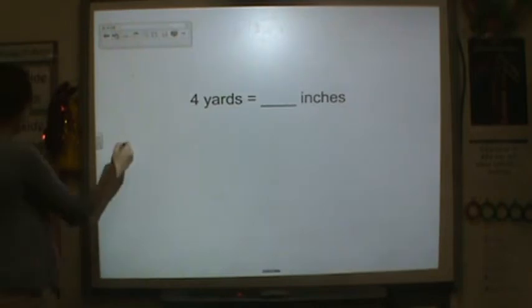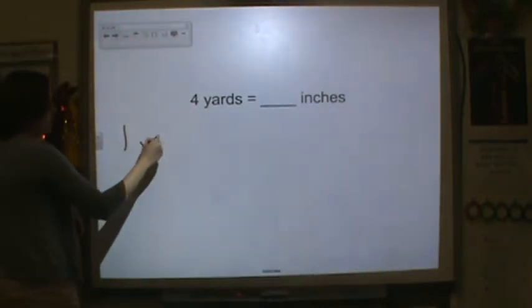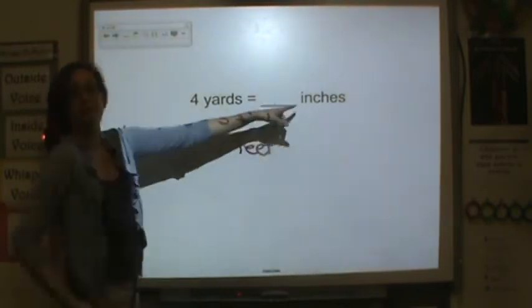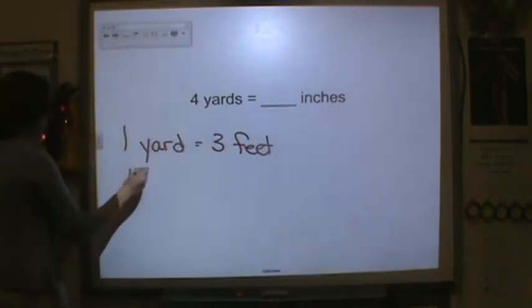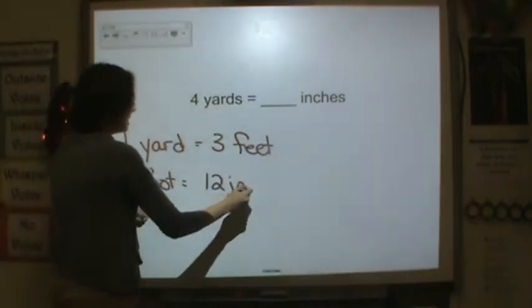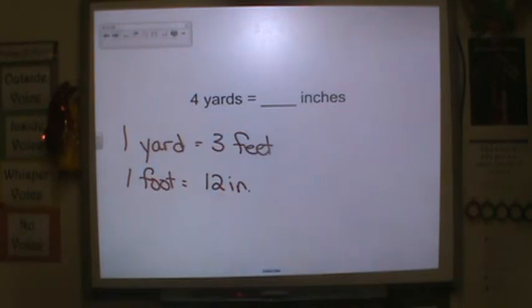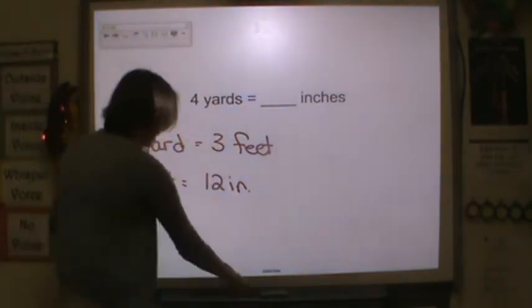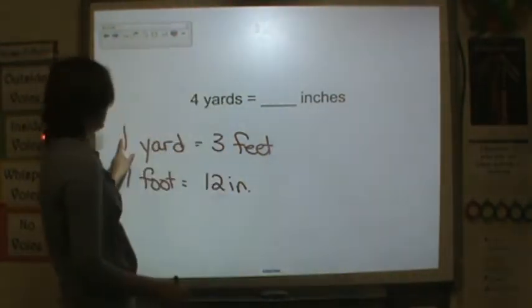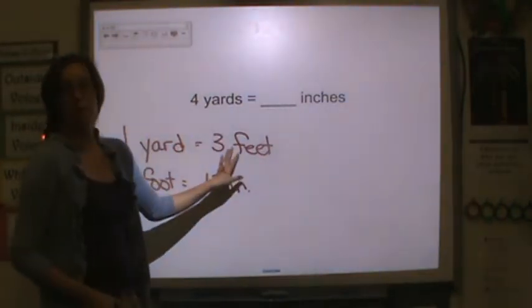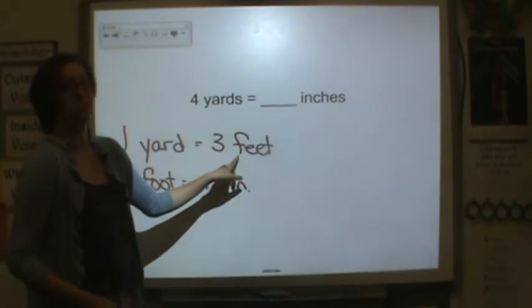Yards to inches. We know that one yard equals three feet. We're converting to inches, and one foot equals twelve inches. So we're going to have to do some conversions here. Four yards, how many feet would be in four yards? We have a one to three ratio. We're going to take however many yards we have and multiply by three to get the feet, because one times three is three.